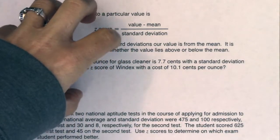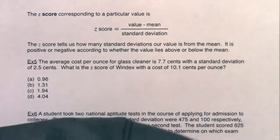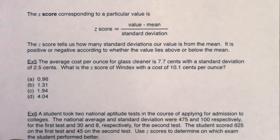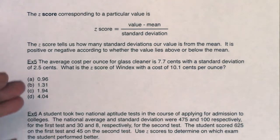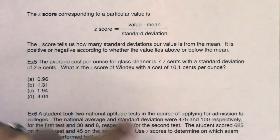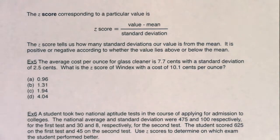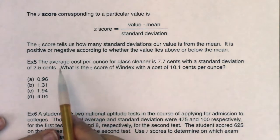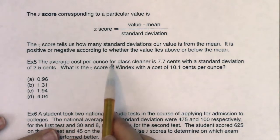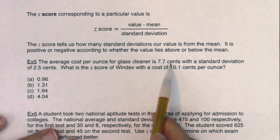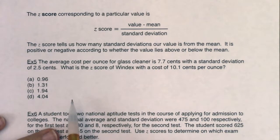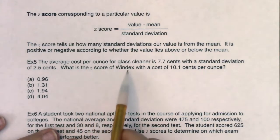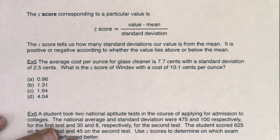It's important: we can take numbers from completely different graphs and put them on a common scale, which we ultimately call the standard normal distribution. When you hear 'standard normal distribution,' it means we're making a normal bell curve but z-scores are on our x-axis. So let's review this concept. The average cost per ounce for glass cleaner is 7.7 cents with a standard deviation of 2.5 cents. What is the z-score of Windex with a cost of 10.1 cents per ounce?